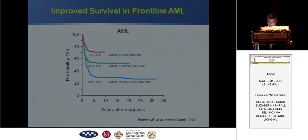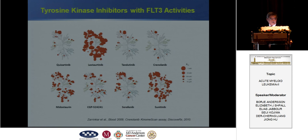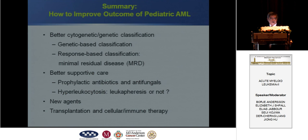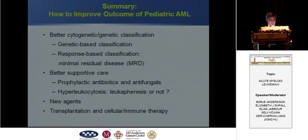Their results are very good, with a survival rate greater than 70%, better than before. Several tyrosine kinase inhibitors with FLT3 activity have been actively studied. To improve the outcome of pediatric AML: first, better cytogenetic and genetic classification using genetic-based approaches and improved MRD assessment; second, better supportive care — prophylactic antibiotics and antifungals can dramatically decrease or abolish sepsis; and new agents like clofarabine can be useful.